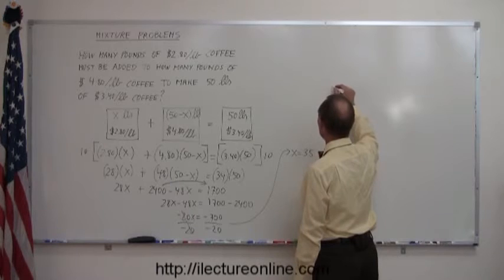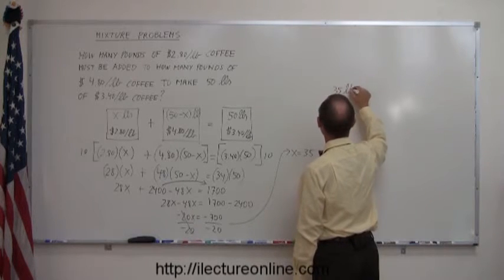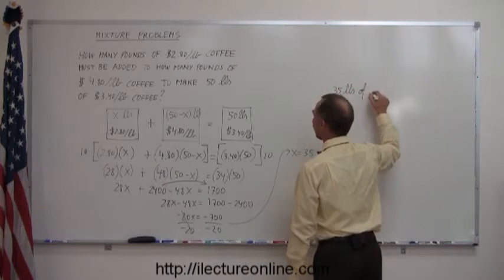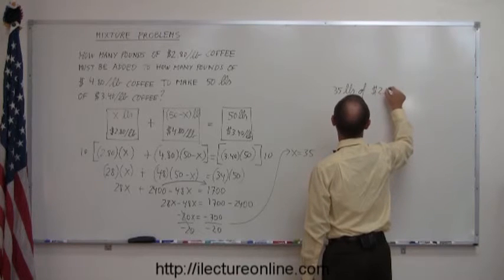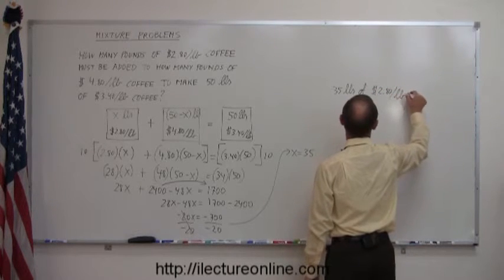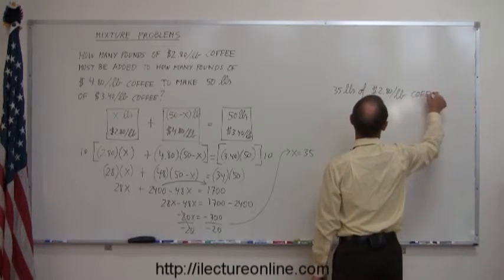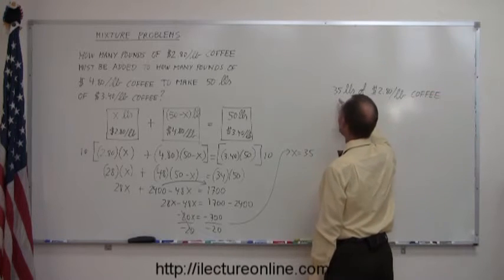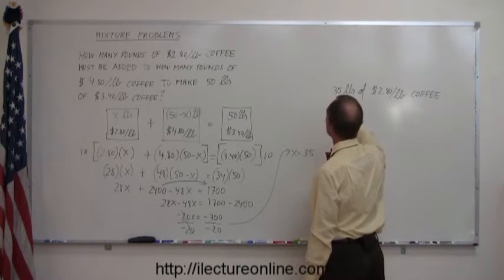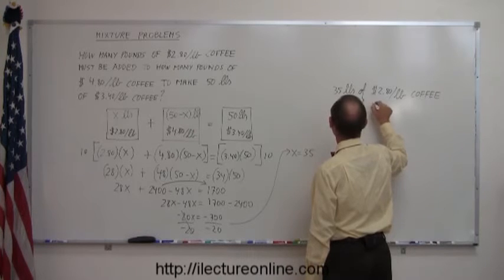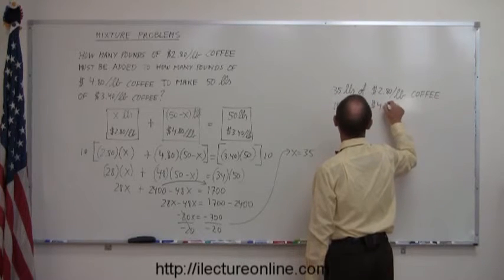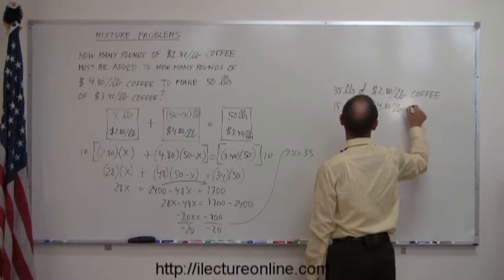So the answer, we need 35 pounds of the $2.80 per pound coffee, and 50 minus 35 is 15 pounds of the $4.80 per pound coffee.